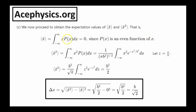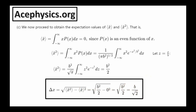The average value of x is zero because x is an odd function and the probability density is an even function. For the average value of x squared, I take x squared times the probability density. The average value of x squared is b squared over 2. The uncertainty in x is equal to the square root of the average of x squared minus the square of the average of x, which gives b over the square root of 2. So if we make a measurement of position, the spread is b over the square root of 2.